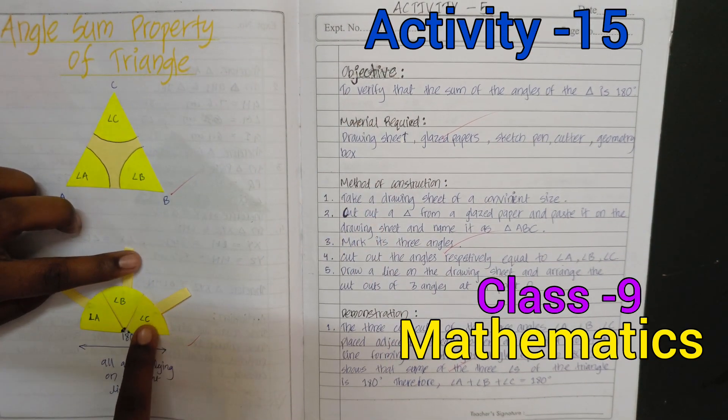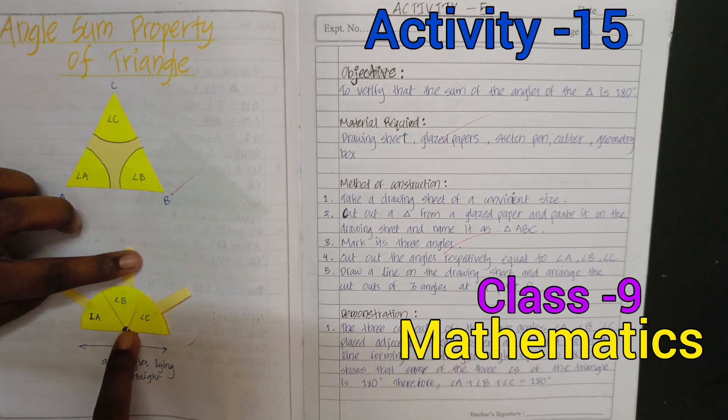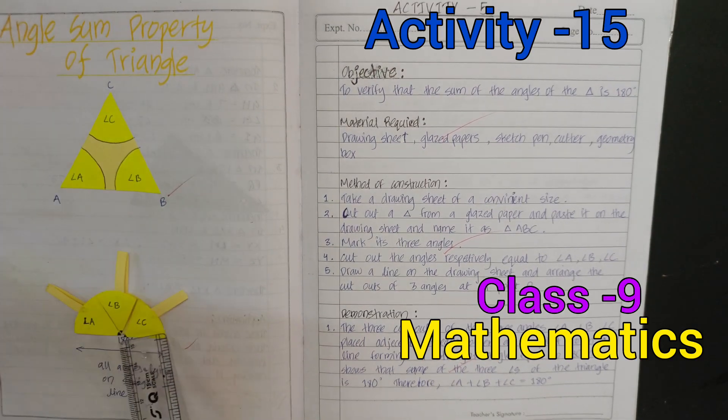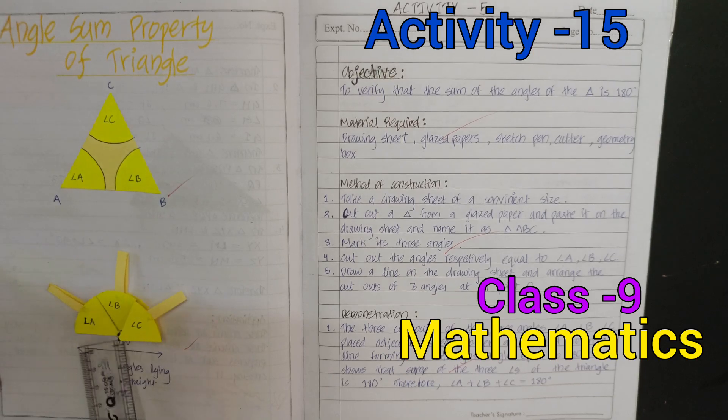We observe that these all angles make 180 degrees at this point. All angles make a straight line. The sum of all angles of a triangle is 180 degrees.